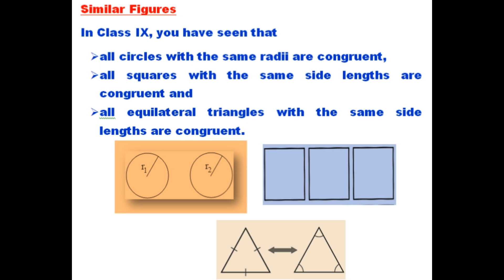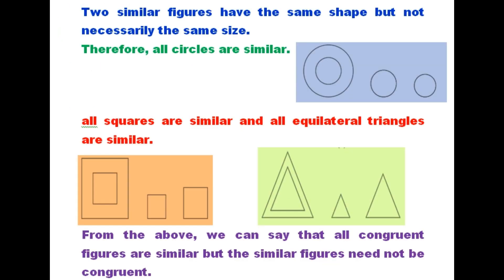You see the picture: three squares all having the same side, so these three squares are all congruent. You also see equilateral triangles: both equilateral triangles have the same shape and same size, so they are congruent.